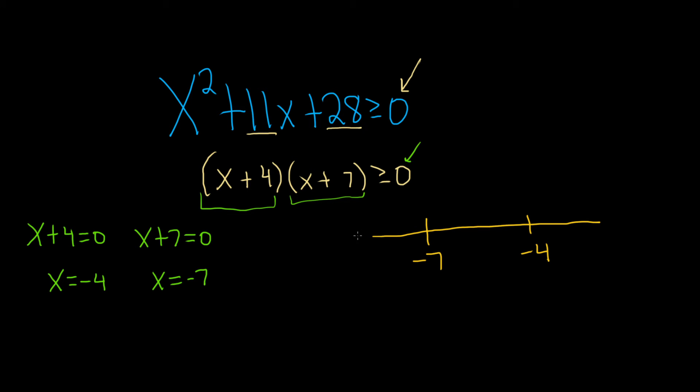And this doesn't always work, but it'll work in most of the problems and all the problems we're doing. So let's just check the easiest number in the entire world, 0. So 0 is over here somewhere. So let's check 0. I'm going to take 0 and plug it in for the x. So we have 0 plus 4, 0 plus 7. And we want to see if this is greater than or equal to 0.